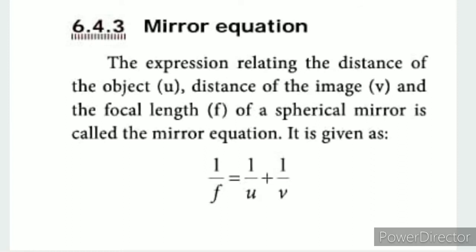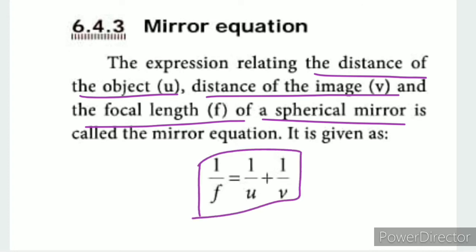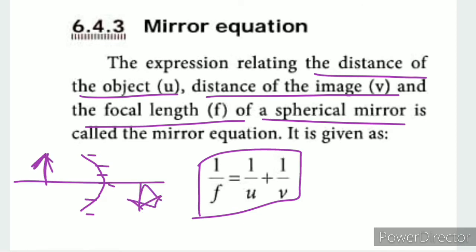The mirror equation relates the distance of the object (u), the distance of the image (v), and the focal length (f). The formula is: 1 by f equals 1 by u plus 1 by v. This is the mirror equation we will use to find the image position and size.